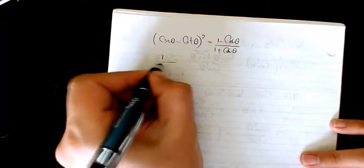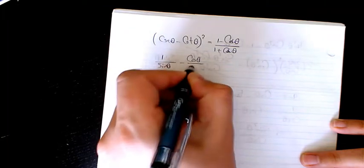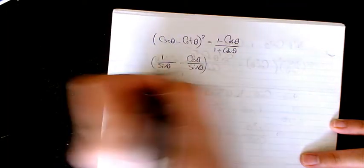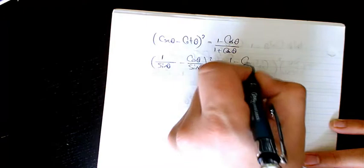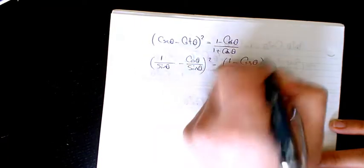Cosecant is the inverse of sine and cotan is cosine divided by sine. So it will be 1 minus cosine divided by sine, squared.